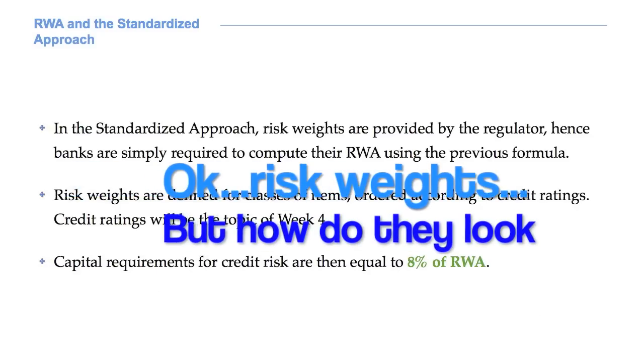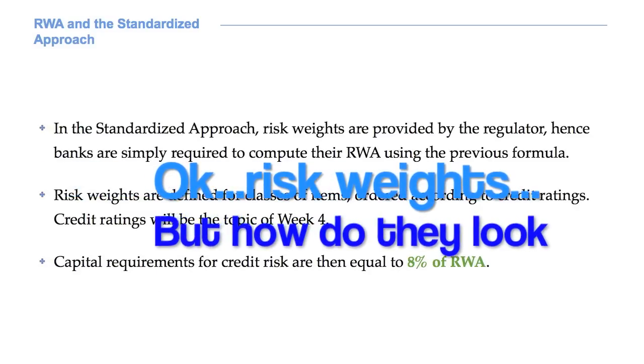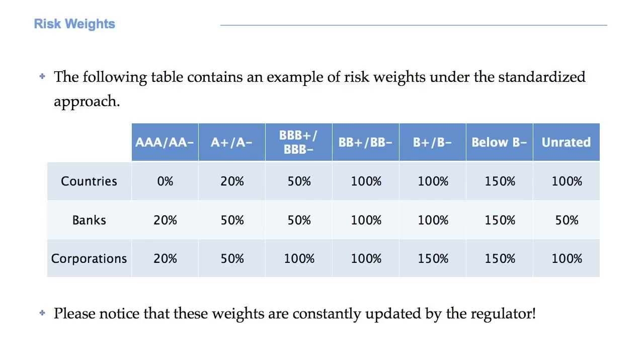As said in week 1, capital requirements for credit risk are then equal to 8 percent of risk-weighted assets. How do the risk weights look like? The table you can see on your screen contains an example of risk weights under the standardized approach. Please notice that these weights are constantly updated by the regulator, therefore they can vary over time.